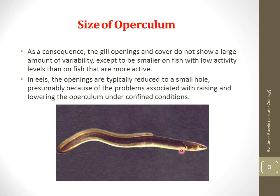The reason for this is that eels live at the bottom and in confined areas, so their opercular openings have become very small. The lower the activity of the fish, the smaller the operculum and gill openings will be. These two features vary with the activity level of the fish.